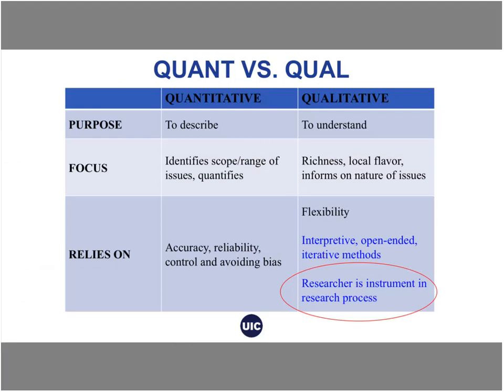One of the best ways to describe qualitative research is to discern how different it is from quantitative research. This table distinguishes how the purpose, focus, and what each research paradigm relies on differs. Quantitative research is really good at describing things, giving us the range, scope, and causal relationships among phenomena. Qualitative research gives us a deeper understanding — we might engage in qualitative research first in order to unpack complicated things so that we know how we want to measure them quantitatively.